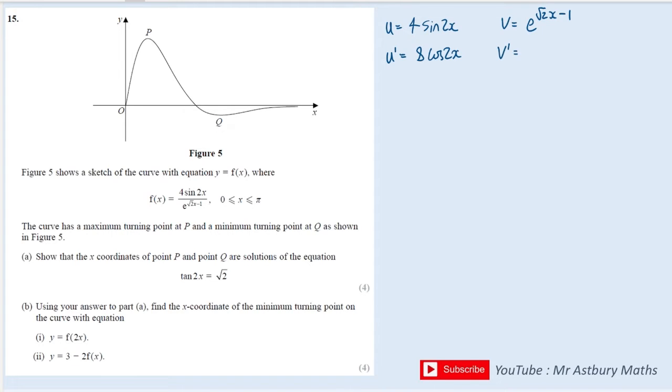And over here, if I want to differentiate an e function, again, the e functions always differentiate to themselves. But I need to take the input, which is root 2x minus 1, differentiate that, which will give me root 2, and times it by the coefficient. So root 2 comes out to the outside.